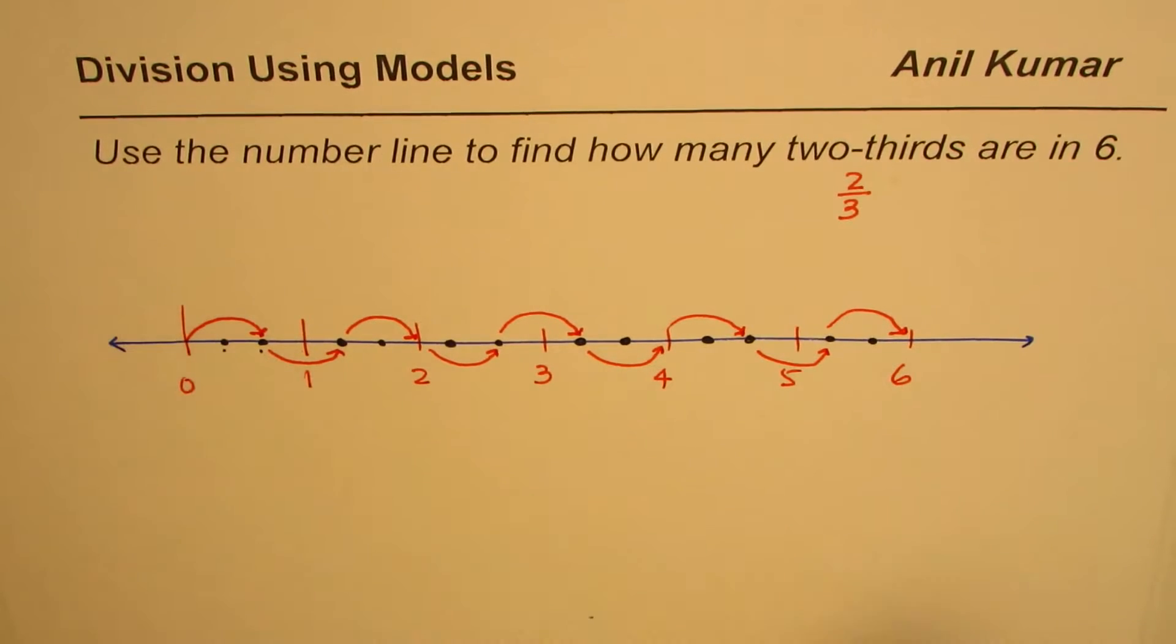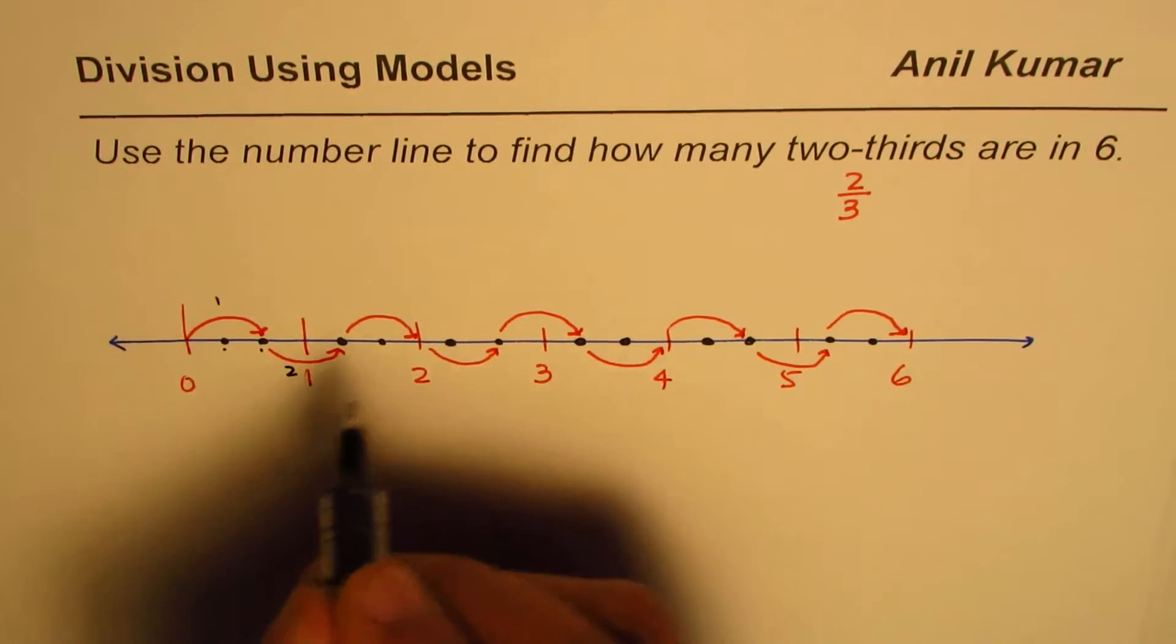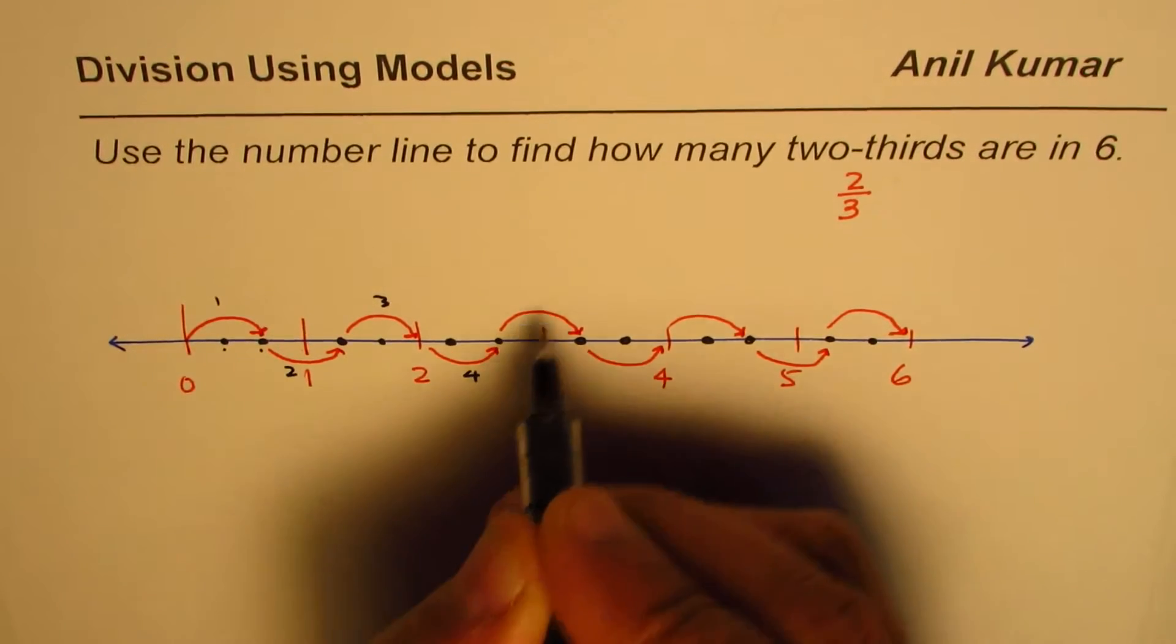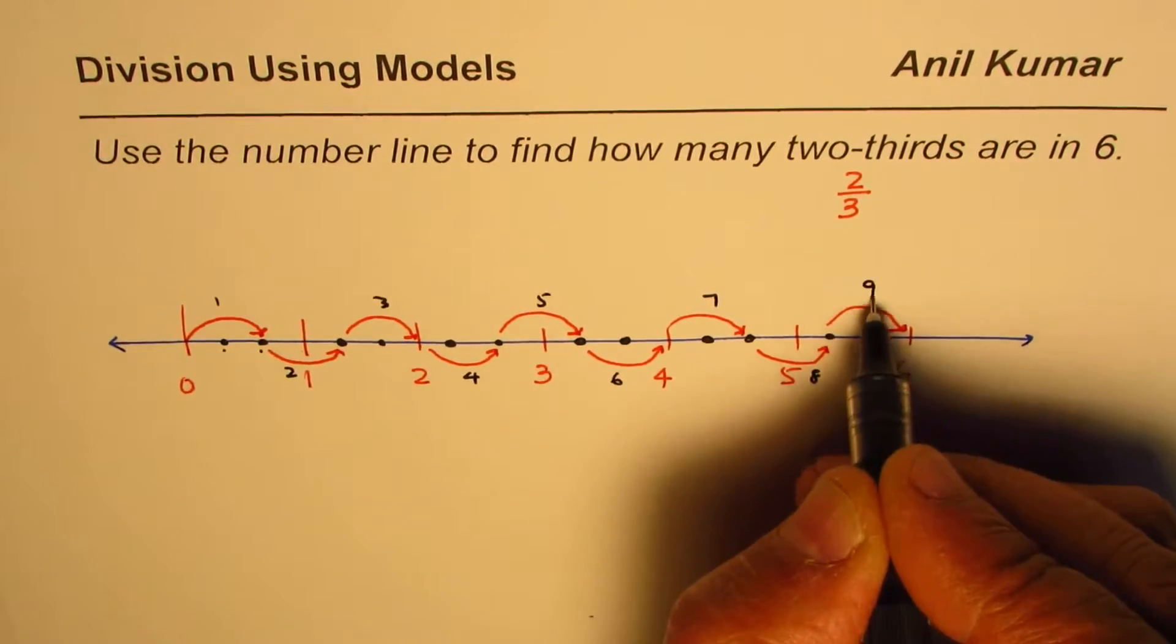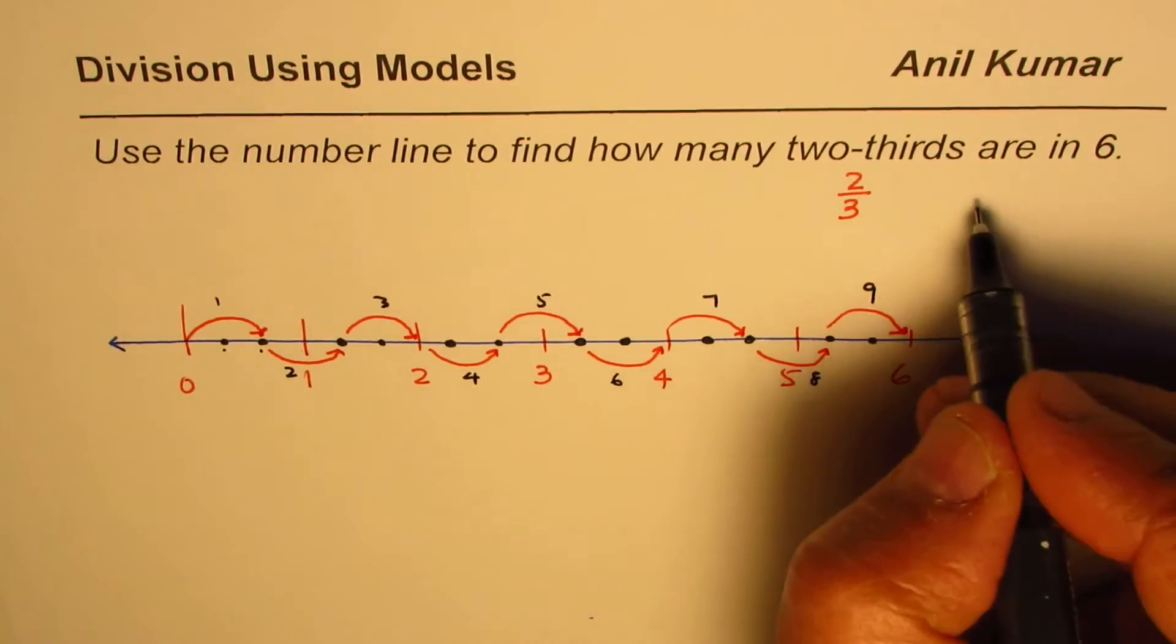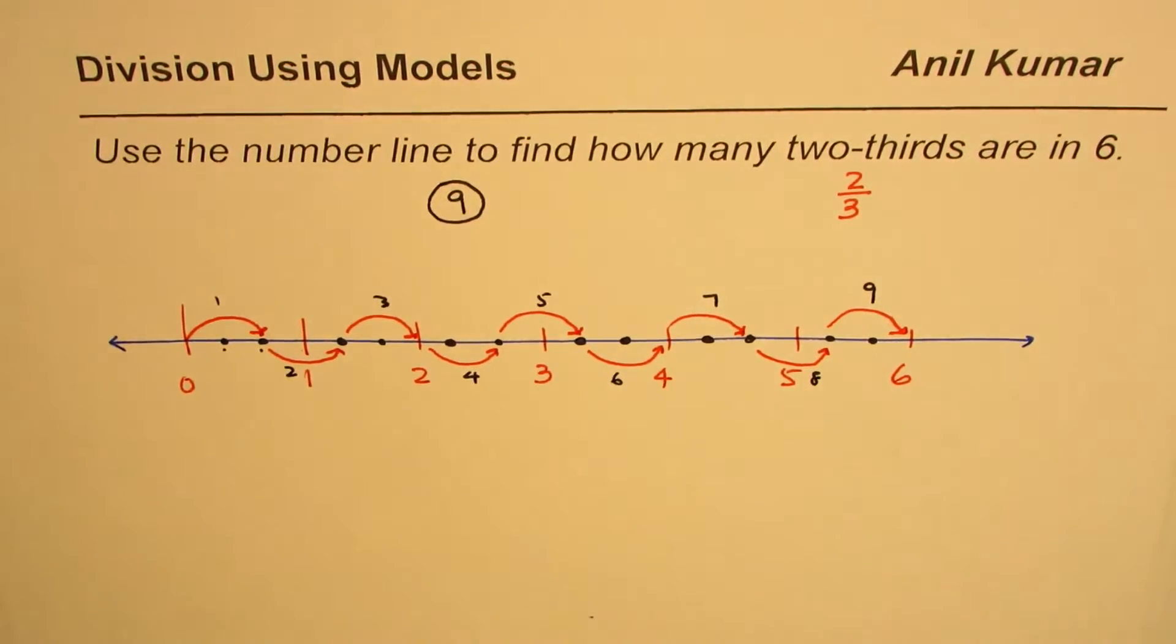How many are there? Let's count. So we have 1, 2, 3, 4, 5, 6, 7, 8, 9. So the answer is 9. Do you see that? 9. How did we get this number? 9. Let's try to understand that part now.